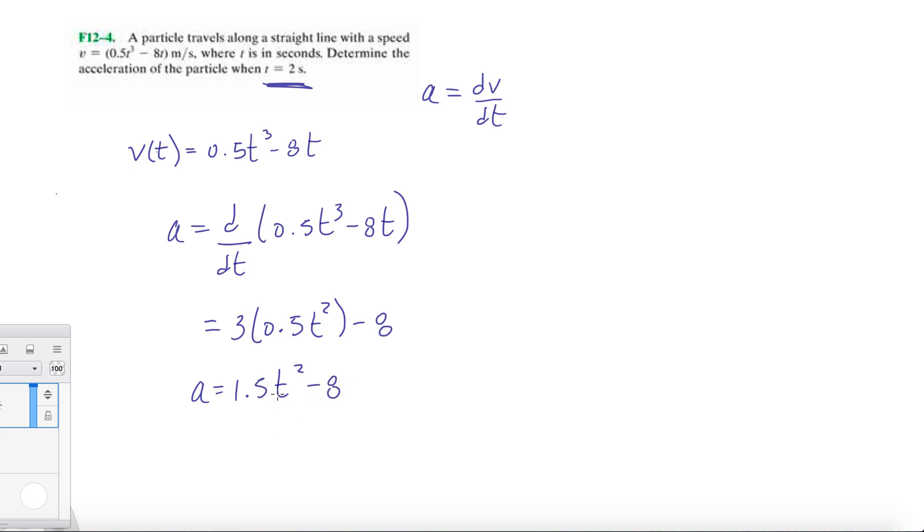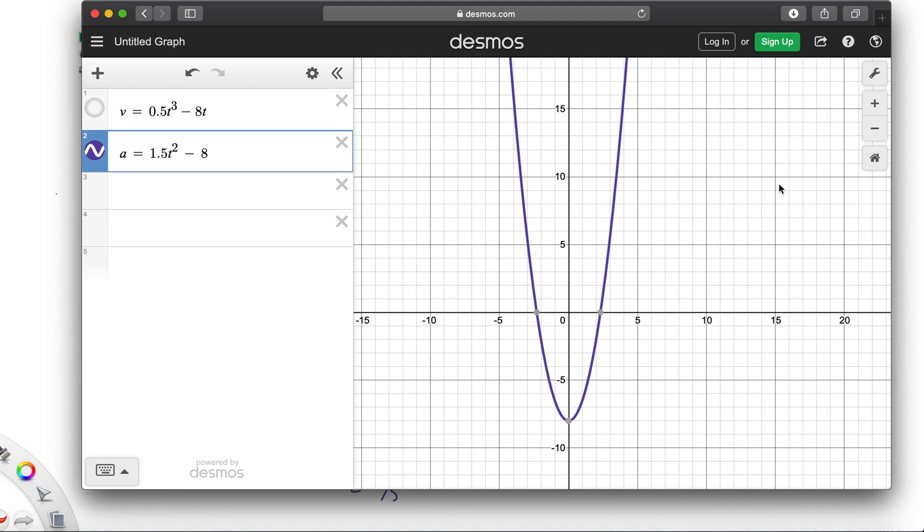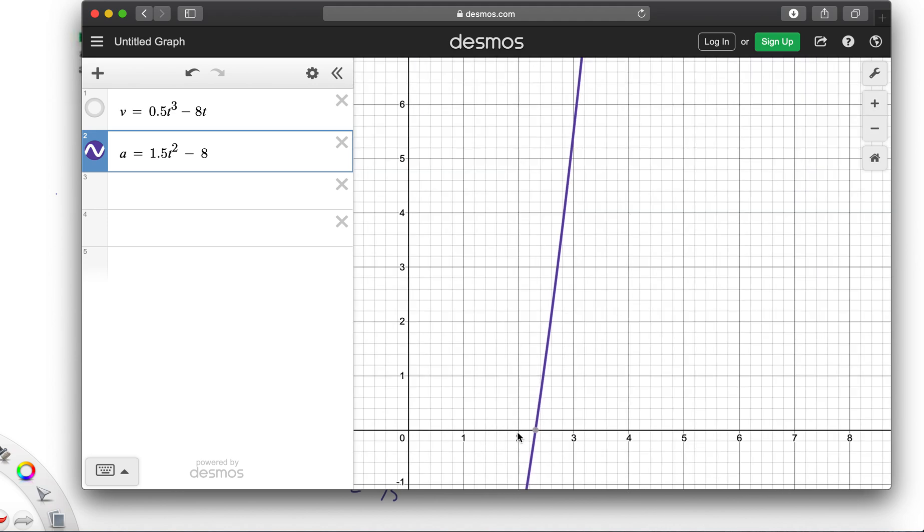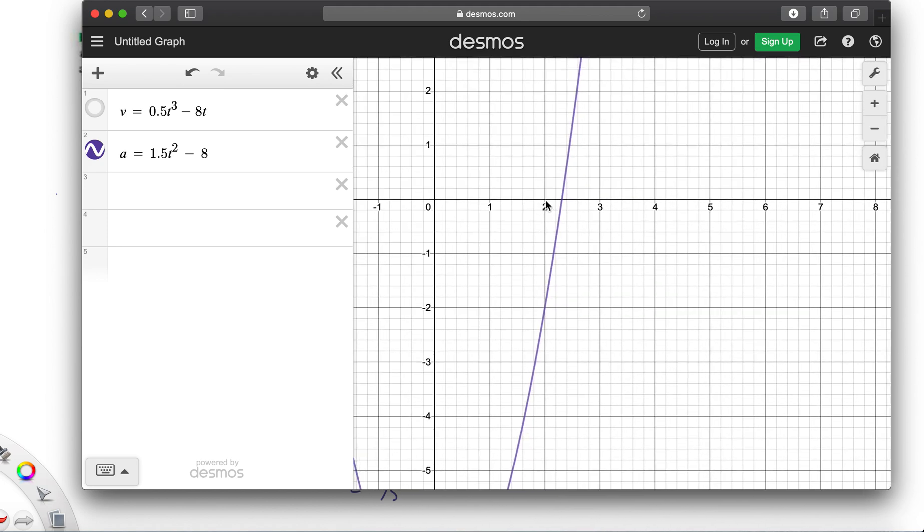So yeah, so we plug in 0 here, we're going to get negative 8 for acceleration, like we saw in the graph. And then we plug in a at 2 seconds. We get 1.5t squared, so that's 4 minus 8. Alright, so the acceleration at 2 seconds is minus 2 meters per second squared. Alright, and that's, let's see. So we zoom in. So at t equals 2 seconds, we get minus 2 right there.